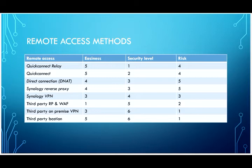With a third-party reverse proxy and WAF, the risk is low. You can block SQL injection, command injection, and XSS attacks, and depending on the product, you can also have an intrusion prevention system and network antivirus. The third-party on-premise VPN is also fairly easy to configure, with a much higher security level and low risk — you need to authenticate to the VPN first, then authenticate to the NAS. Finally, the third-party bastion is easy to configure, with very high security and very low risk, but it's more for administrative access.